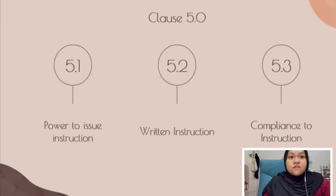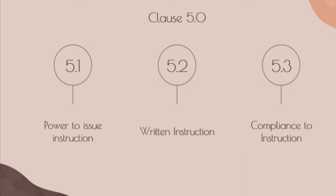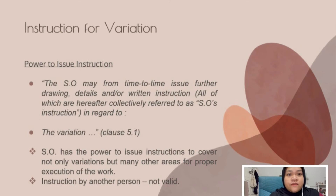Next is Clause 5.0: Clause 5.1 - Power to Issue Instruction, Clause 5.2 - Return Instruction, and Clause 5.3 - Compliance to Instruction. Clause 5.1 explains that the SO has the power to issue instructions to cover not only variations but many other areas for the proper execution of work. Any instructions from any other person are not valid.